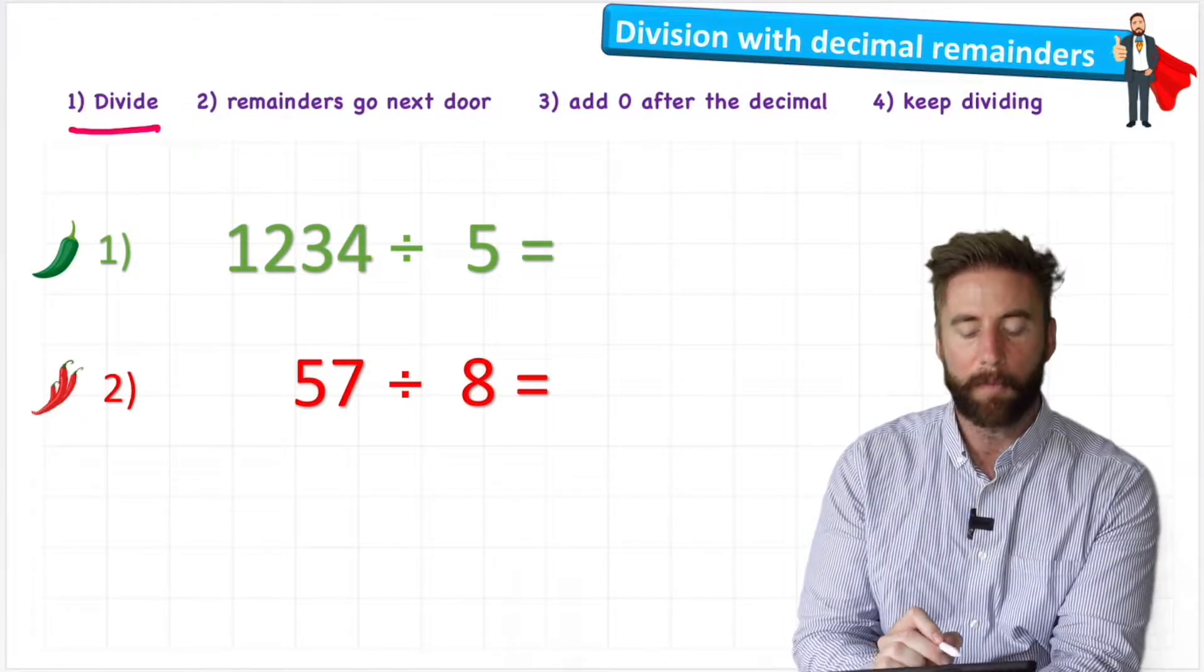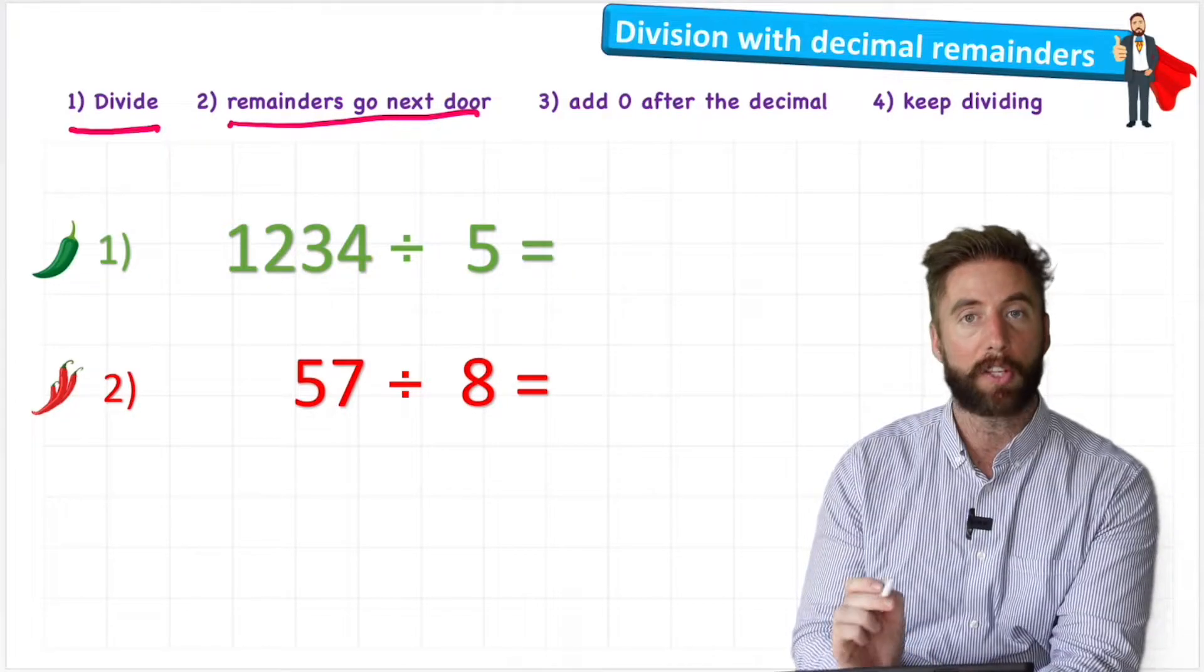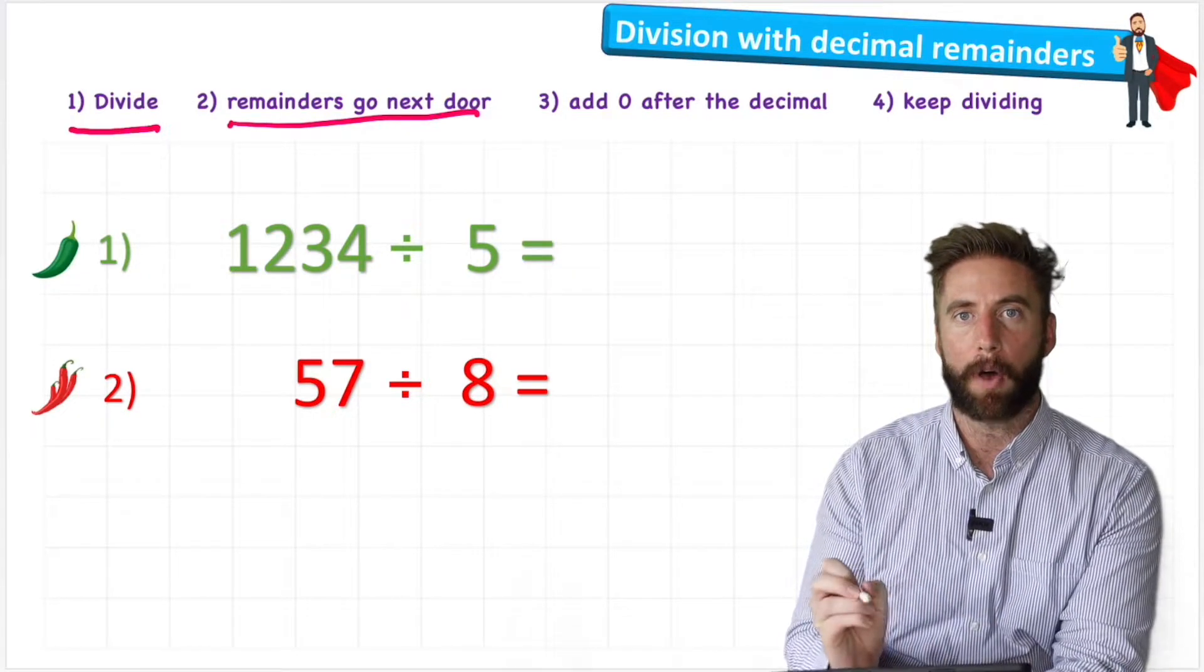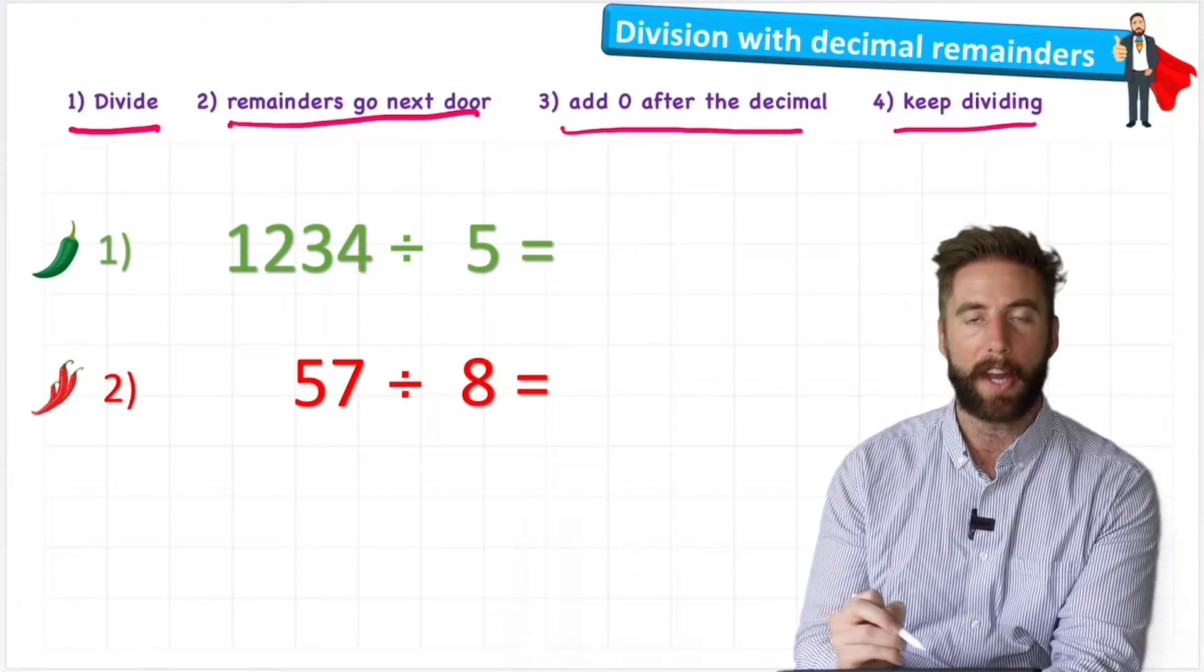First says to divide, we're just going to divide the number like normal, remembering that remainders go next door. But then here's the important part, when we get to the end, if we have anything remaining, we're going to add a zero after the decimal and keep dividing.